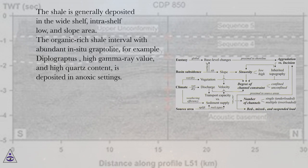The shale is generally deposited in the wide-shelf, intrashelf low, and slope area. The organic-rich shale interval with abundant in-situ graptolite, for example Diplograptus, high gamma-ray value, and high quartz content, is deposited in anoxic settings.